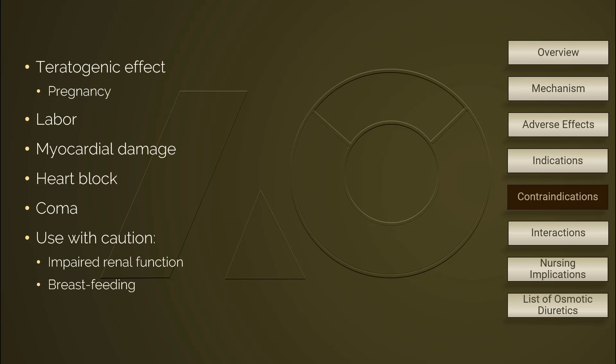An osmotic diuretic has a teratogenic effect. It may cause fetal hypocalcemia and bone abnormality if given to an expectant mother for more than five to seven days. It is not recommended to use osmotic diuretics during pregnancy unless the condition is clearly indicated.